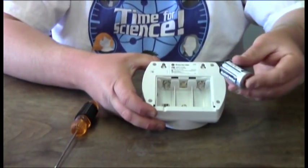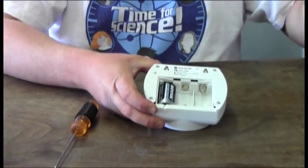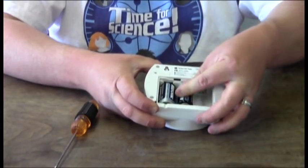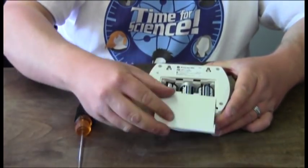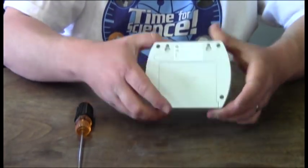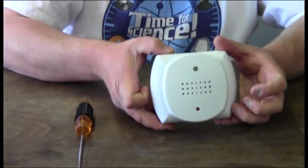Once you do that you can install the C batteries and reinstall the door. That's all you need for the receiver and bell.